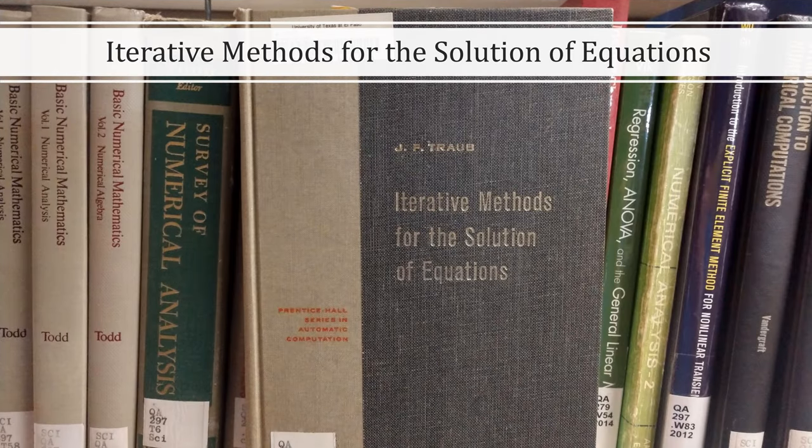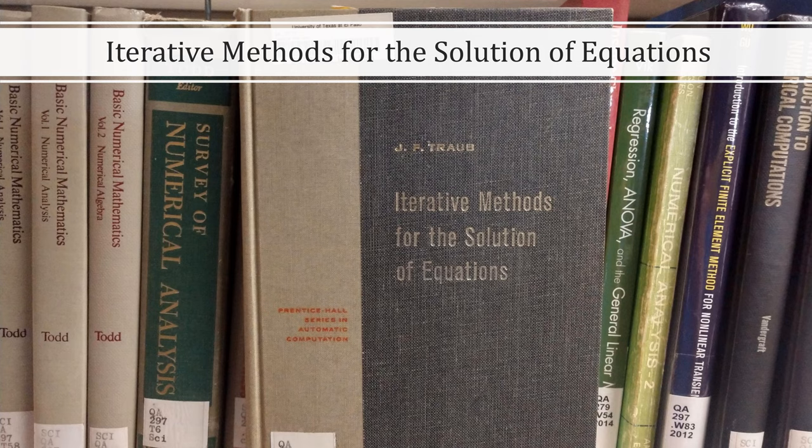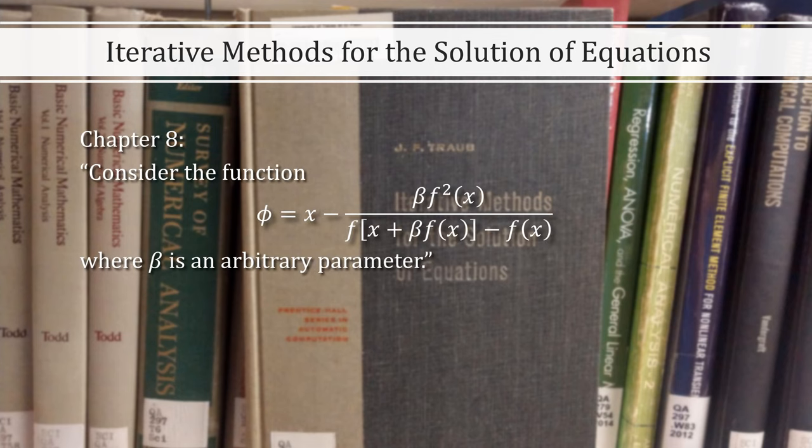Let's turn to J.F. Traub's book Iterative Methods for the Solution of Equations. In it, Traub writes, consider the function, this function, where beta is an arbitrary parameter. When beta is equal to 1, back is Steffensen's method.